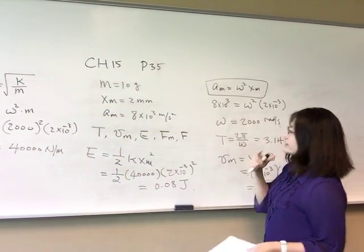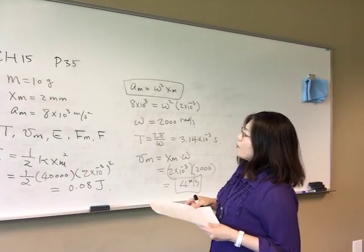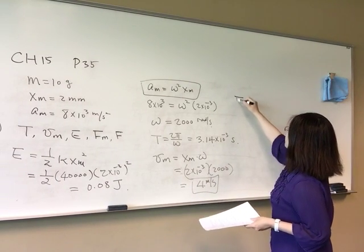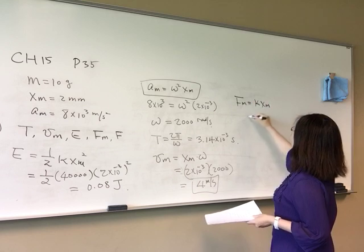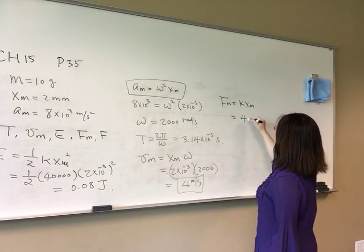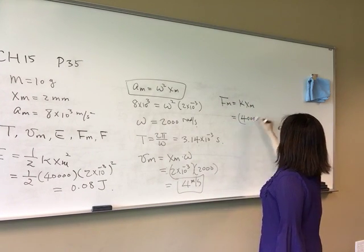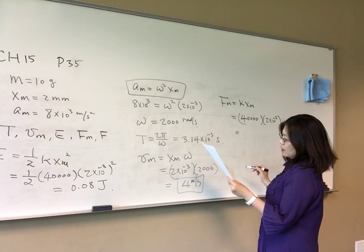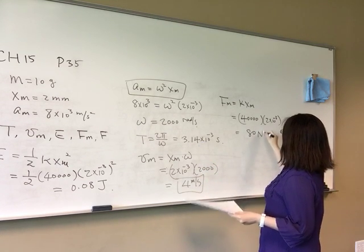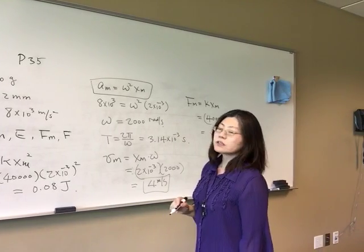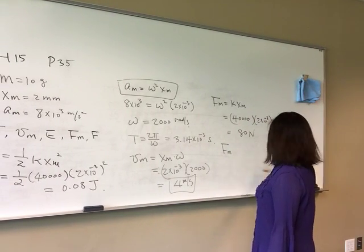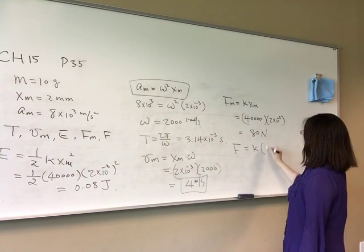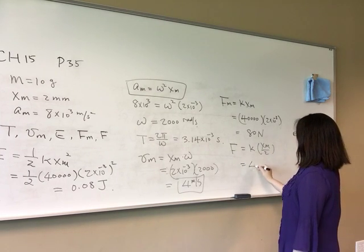For maximum force, the spring force at maximum displacement is Fm equals k times xm. With k equal to 40,000 and xm equal to 2 times 10 to the negative 3rd, Fm equals 80 newtons. At half the maximum displacement, the force is k times xm over 2, which gives 40 newtons.